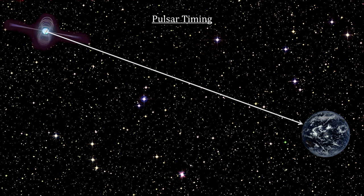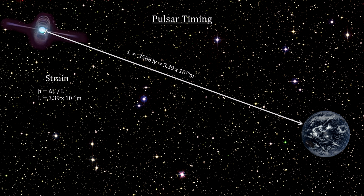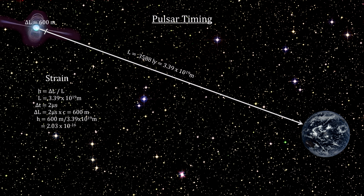For example, suppose there's a pulsar 3,588 light-years away with a pulse every 2 milliseconds. In this example, a supermassive black hole in a spiral creates a gravitational wave that increases the time between pulses by 2 microseconds over 6 years. That's 600 meters, giving us a strain of 2 times 10 to the minus 16.